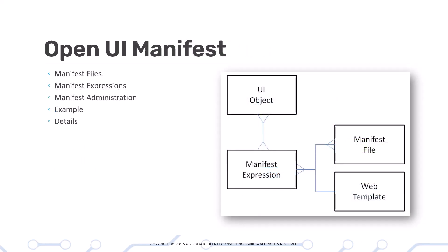The manifest chapter focuses on the Open UI manifest with all its details — down to manifest file registration, manifest expressions, and how to handle UI object and web template selection.